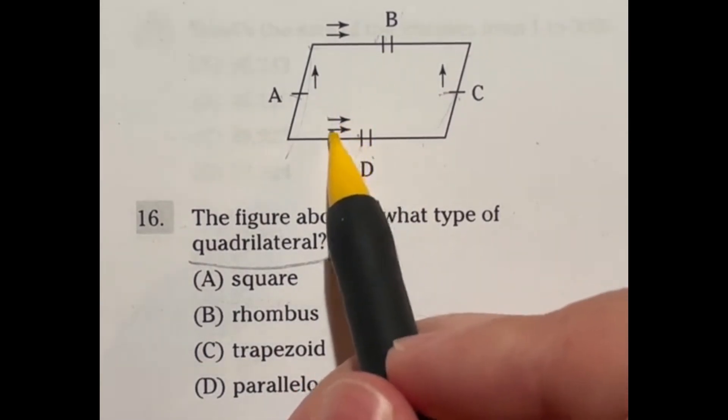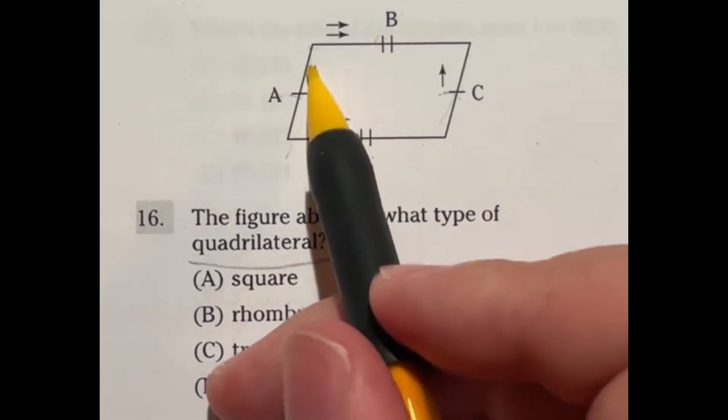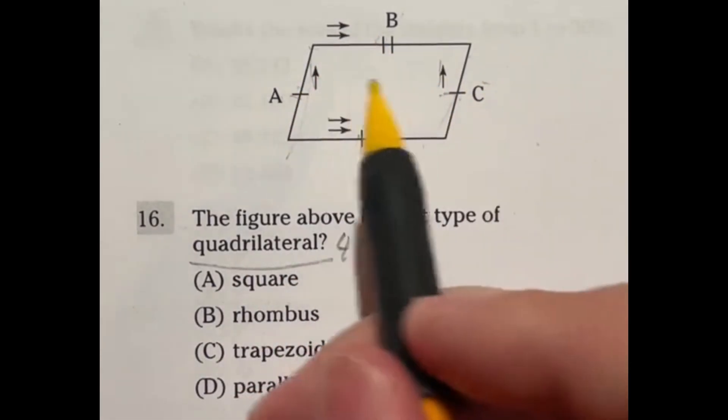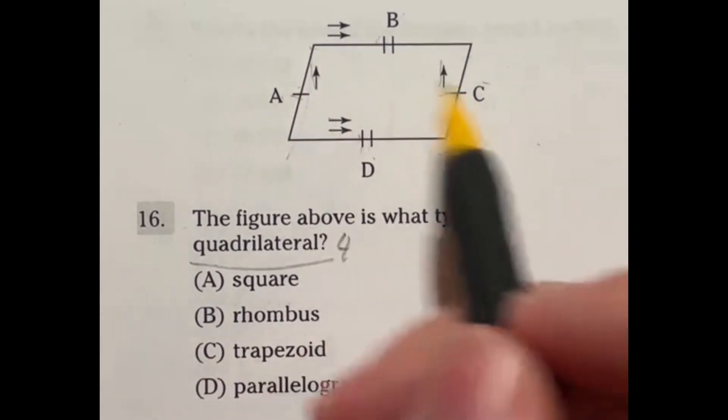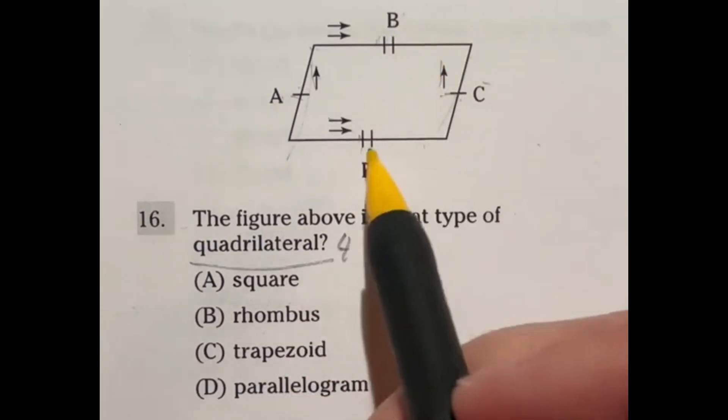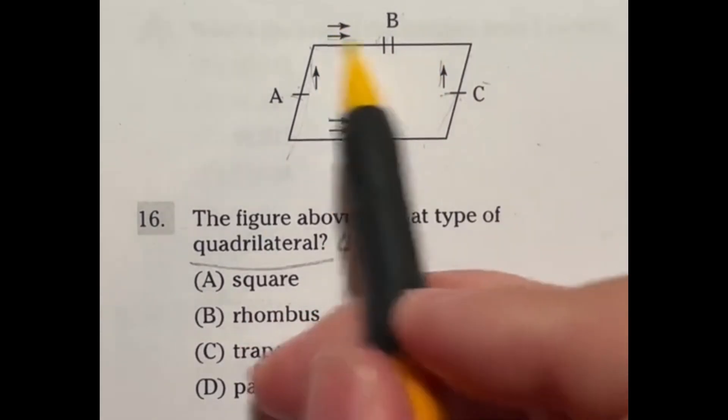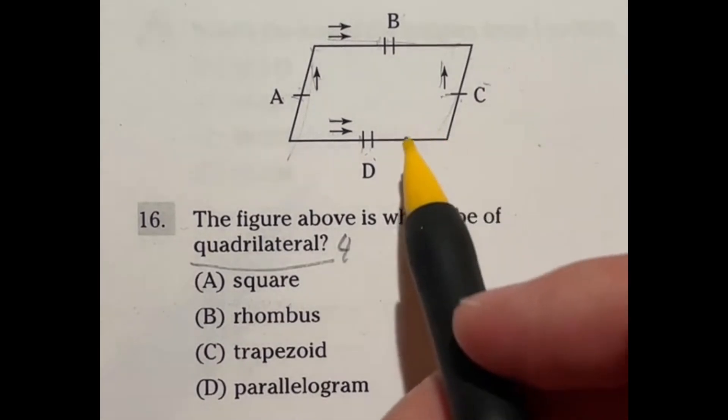Now what do these little arrows mean? Well, because this has an arrow going up and this has an arrow going up, it means that these two are parallel to each other going in the same direction. And B and D have the double arrow, meaning those two are parallel to each other going in the same direction.